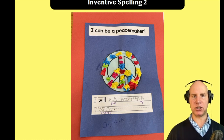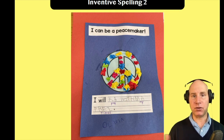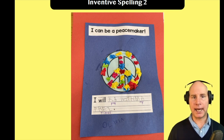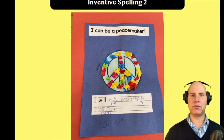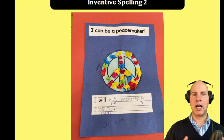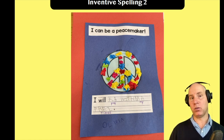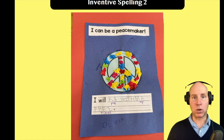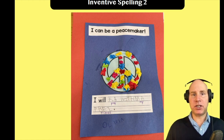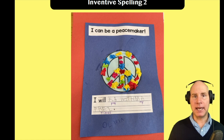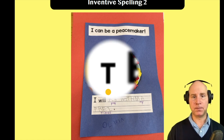This is the type of inventive spelling you're going to see for a transitional writer. Now, what does she need to learn? She needs to learn some phonics rules on how to represent the 'a' sound in the word 'play.' This is going to take more time, but for now this is exactly where she needs to be as she's moving into that transitional writing stage.